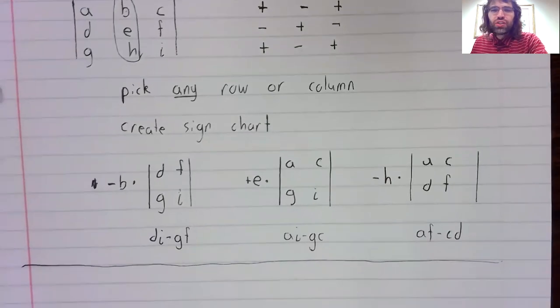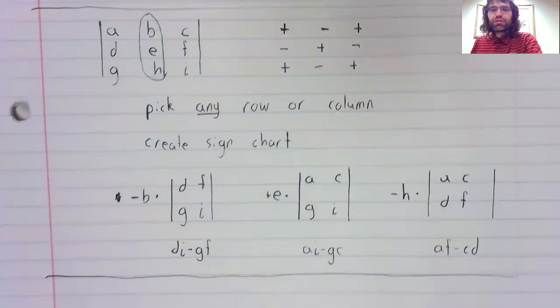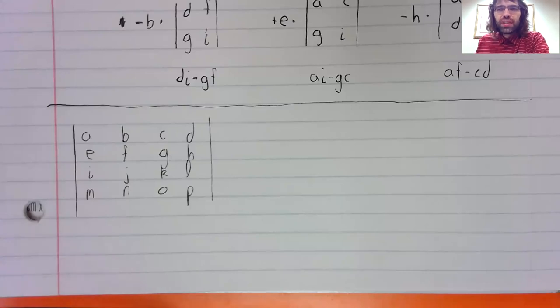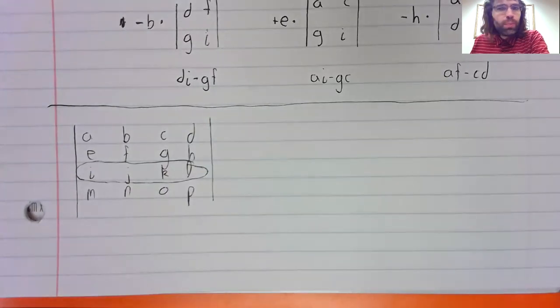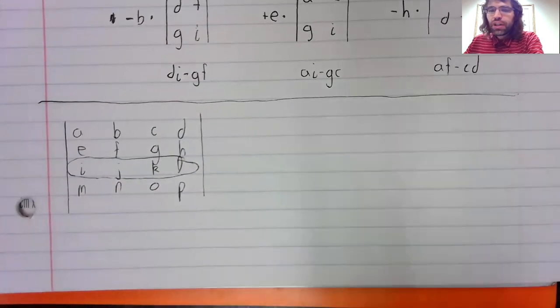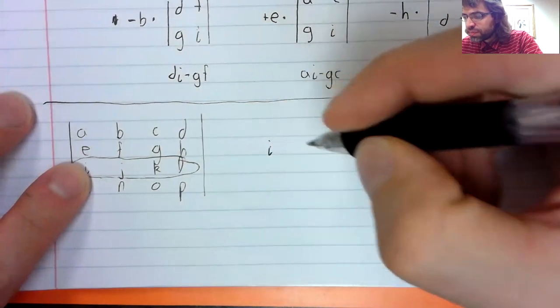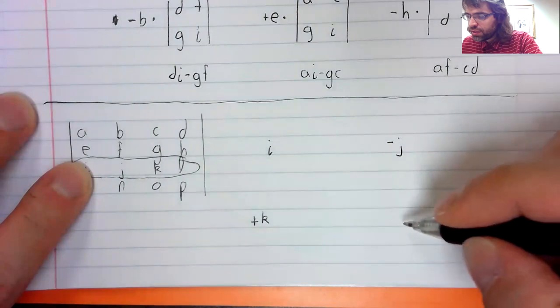And this definition generalizes in a natural way. If instead of a three by three matrix, you had a four by four matrix, you'd approach this in a similar way. You'd select a row or a column. And I know it's really not obvious from this definition, but I promise it does not matter what row or column you select. You'll wind up with the same number in any case. And rather than make a sign chart, let's just go positive, negative, positive, negative, positive, negative.